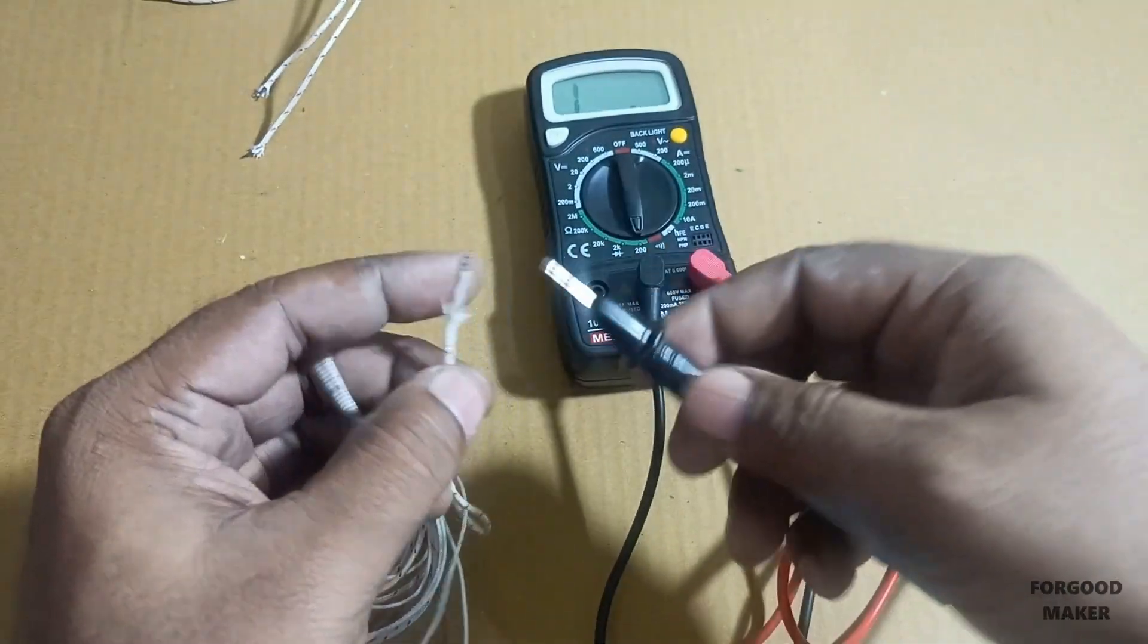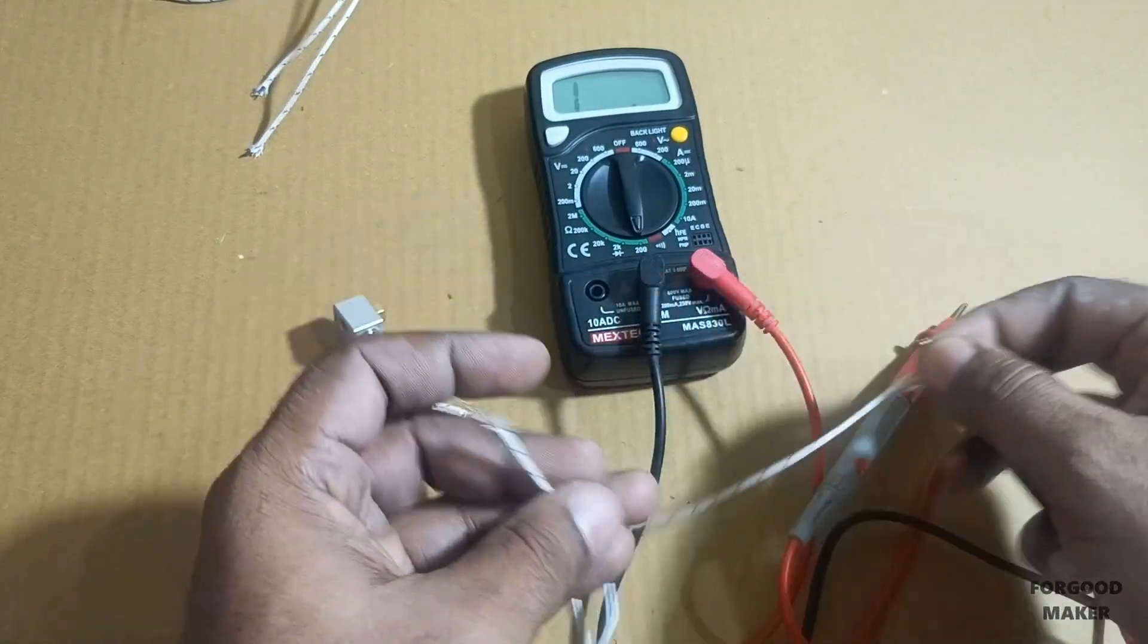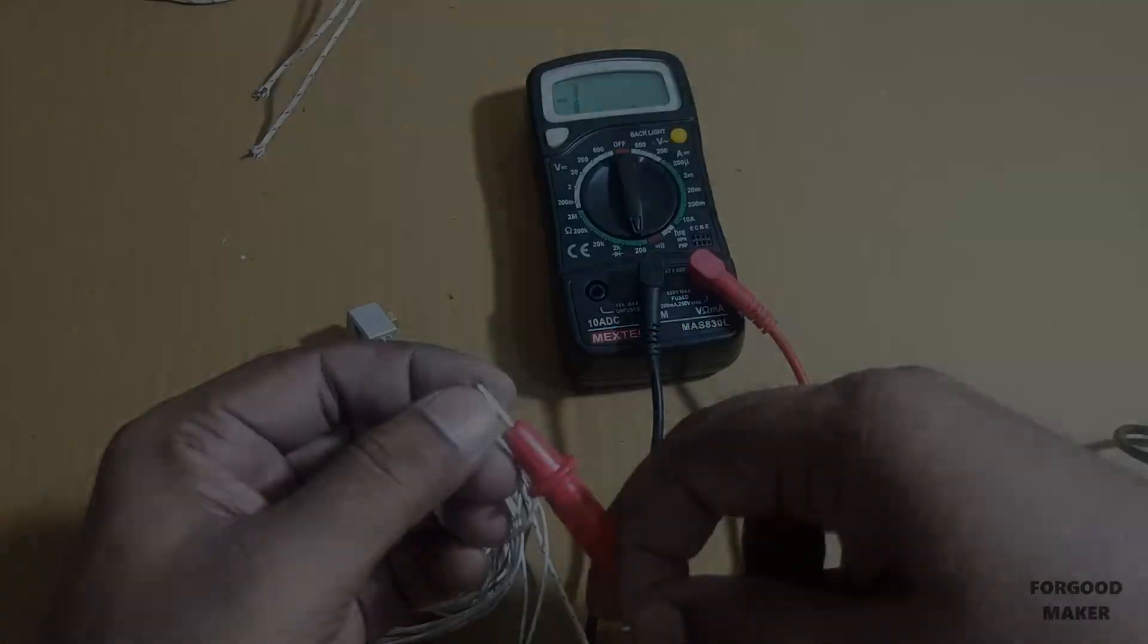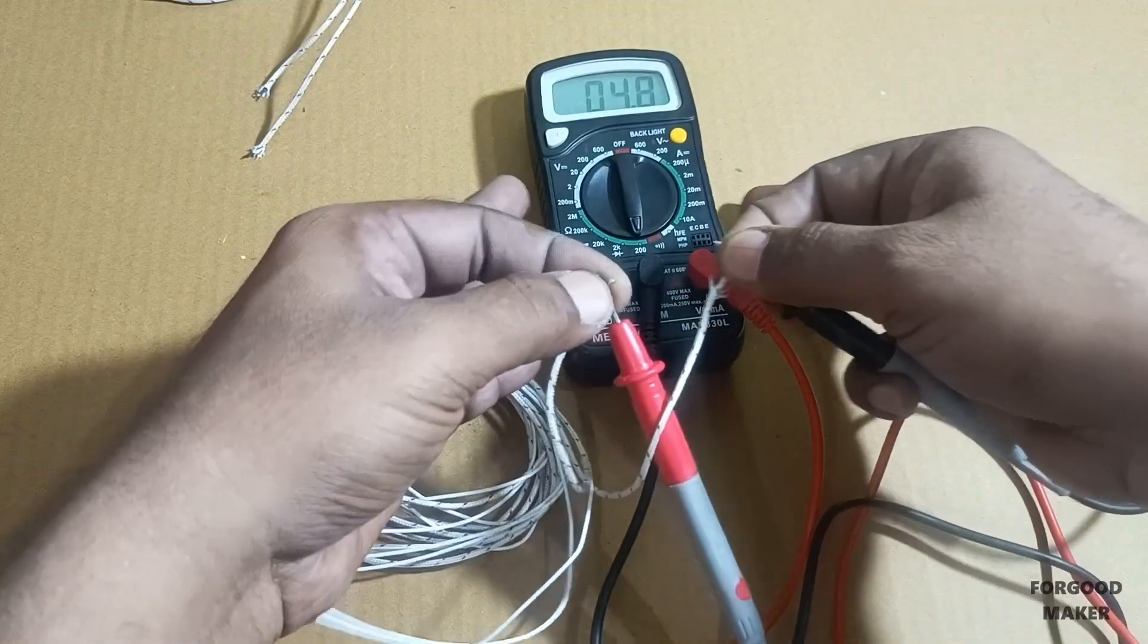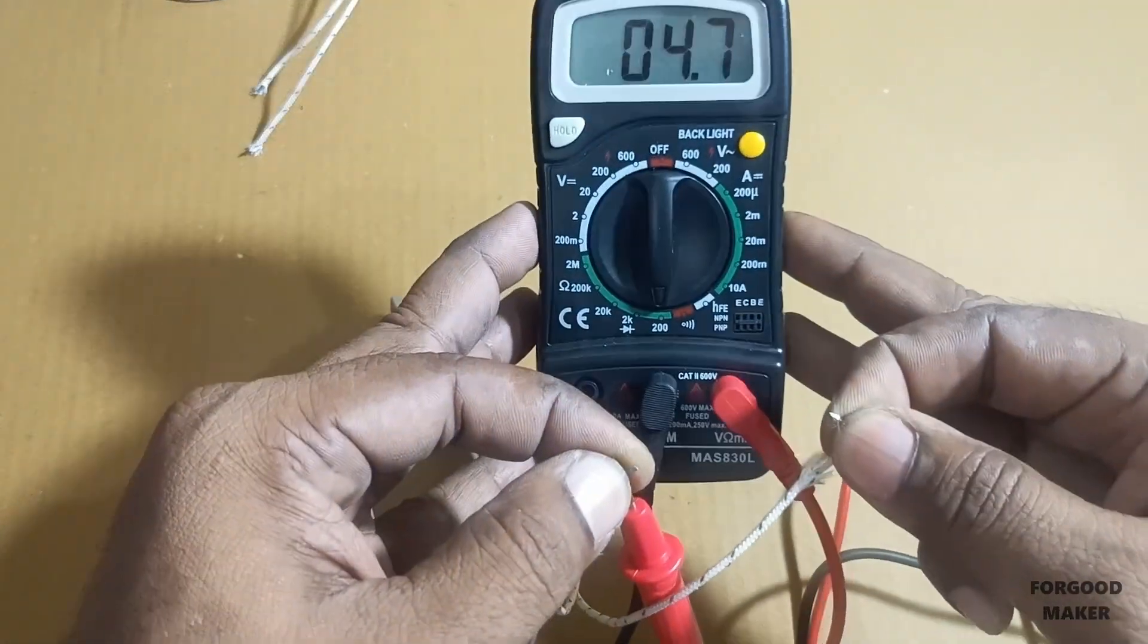Connect the 12-volt cartridge terminals to multimeter probes. 12-volt heater cartridge indicates 4.7 Ohms.